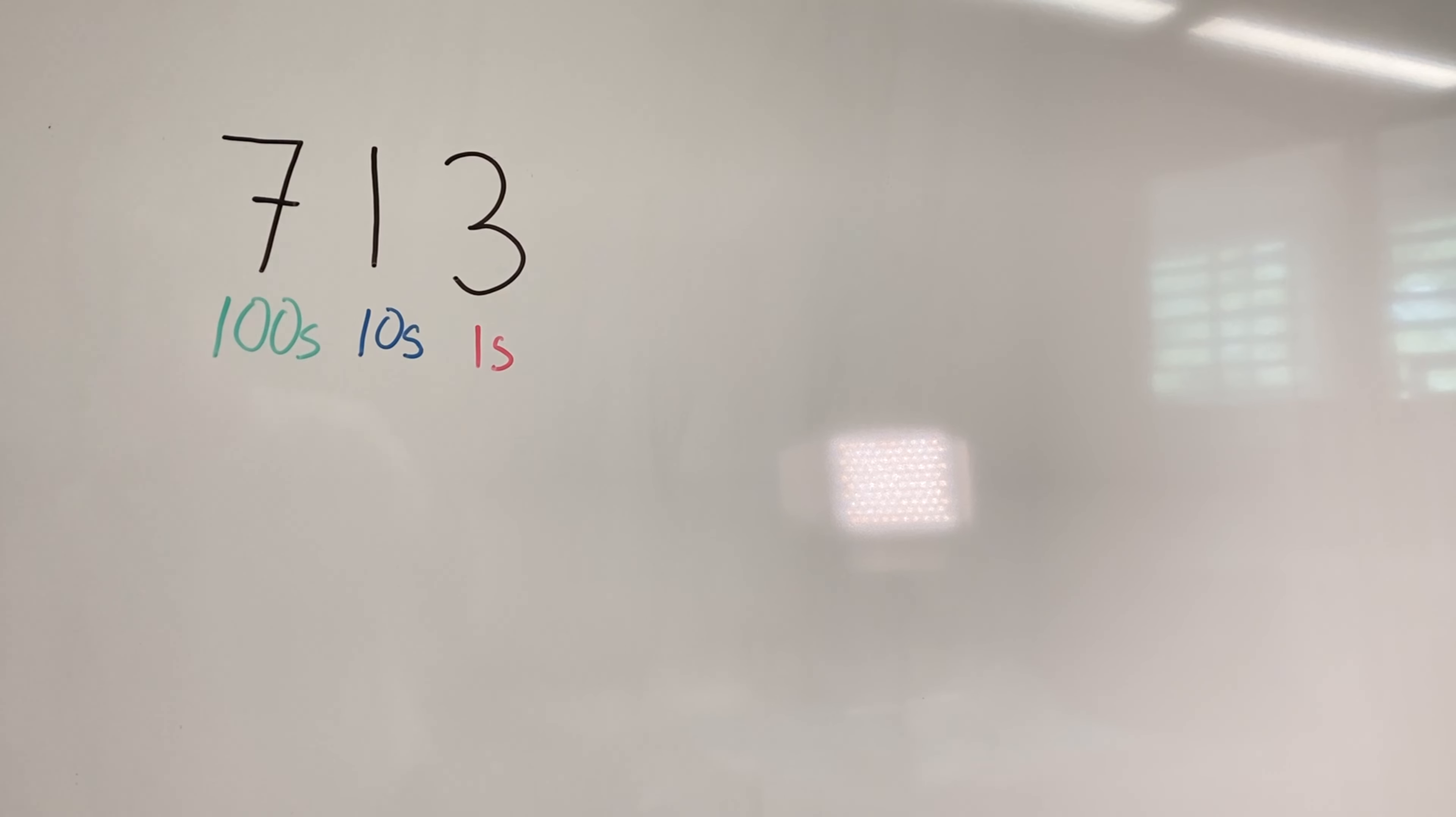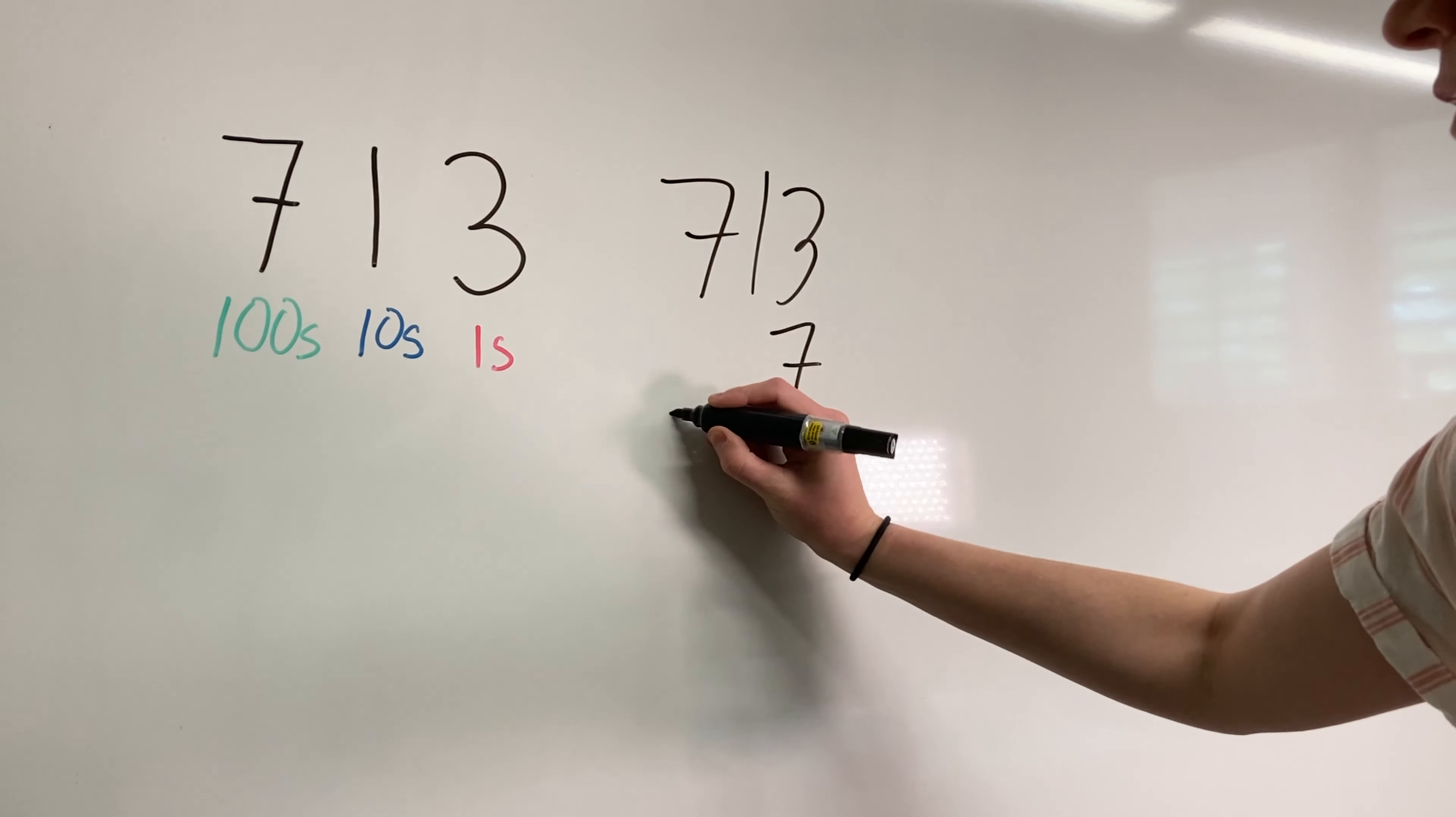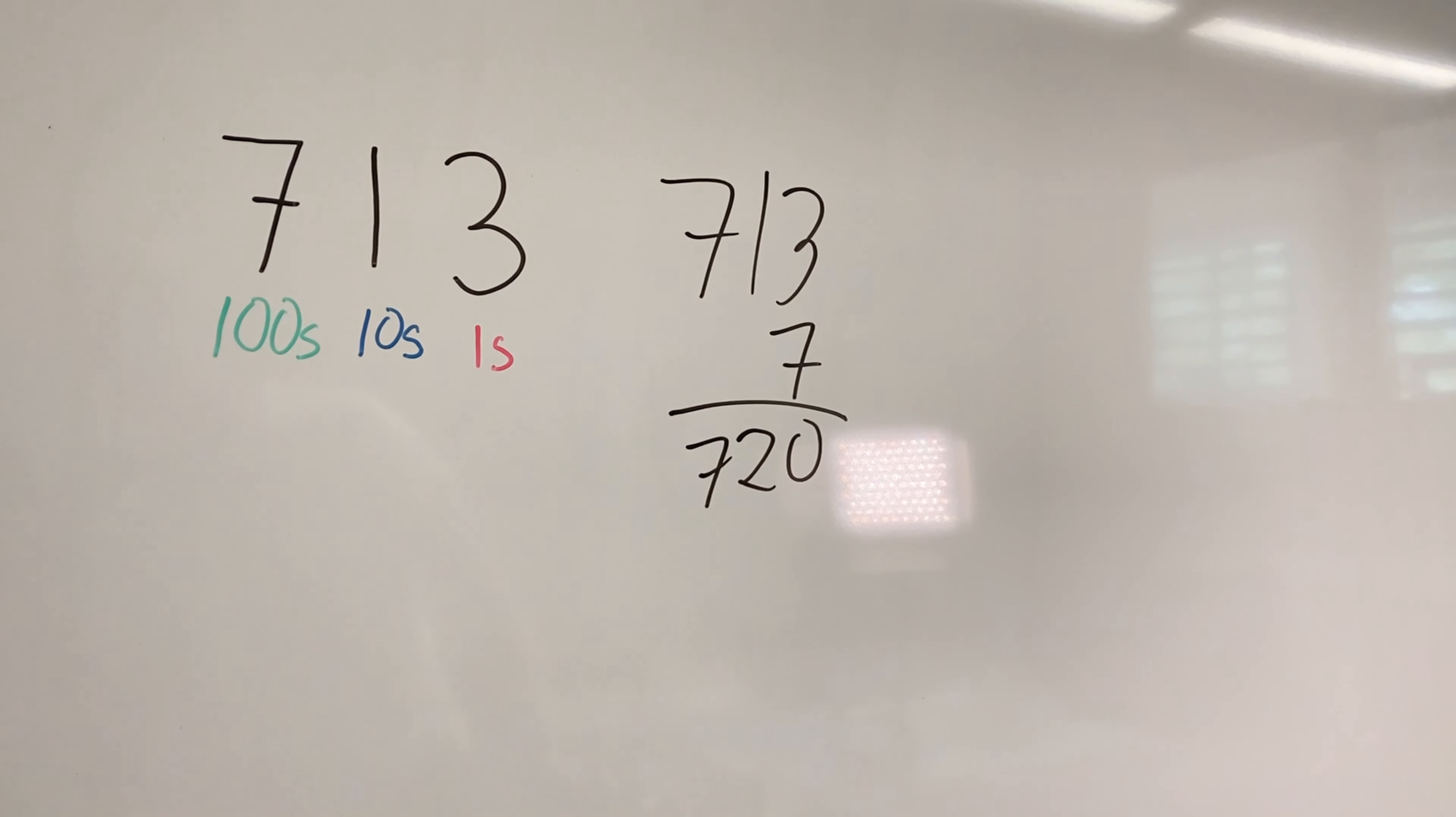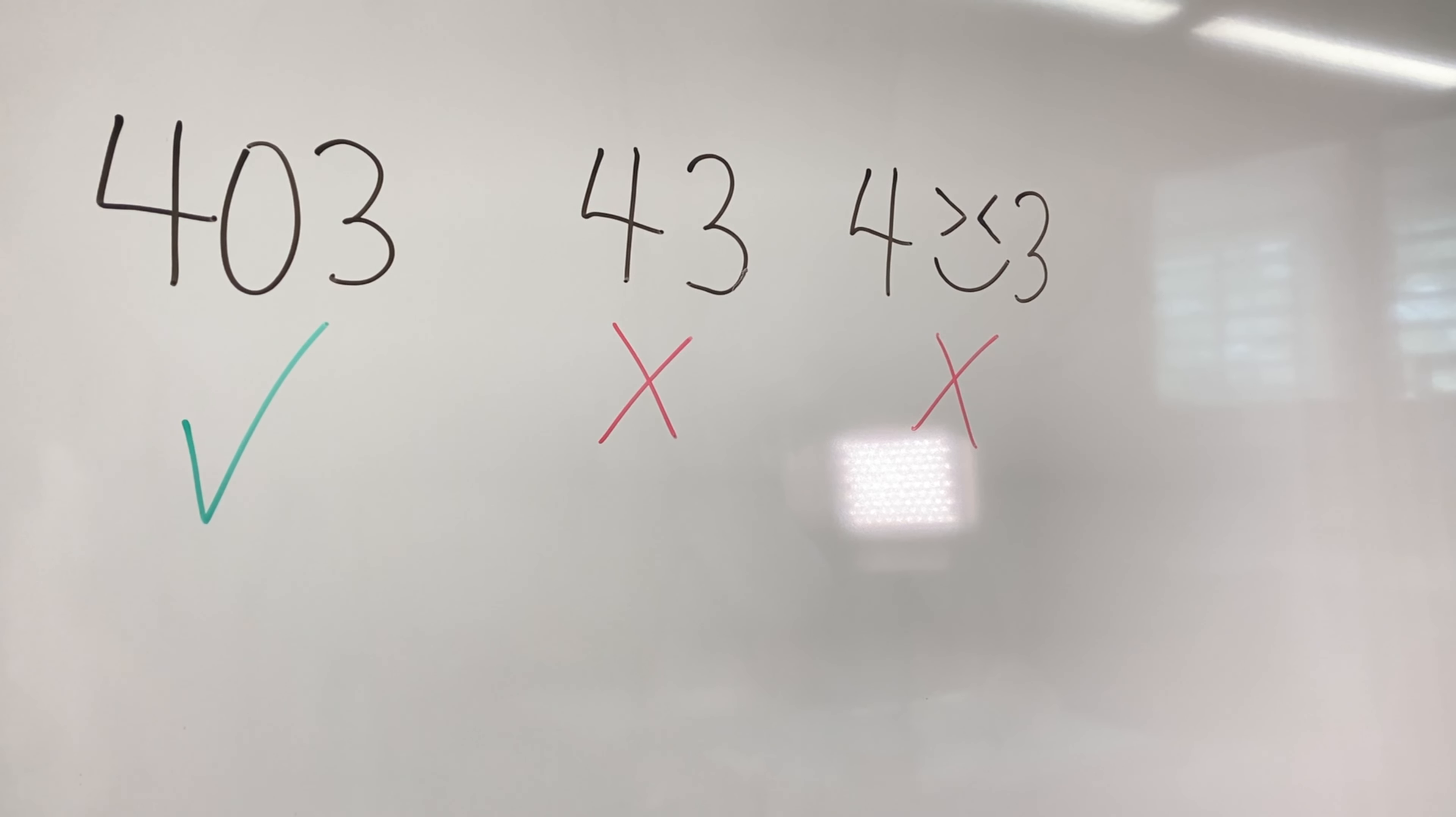When we fill up one of our place value columns, we don't just keep going in that column. We transfer it over to the next column. So let's say we want to take 713 and add seven to it. We're going to fill up our ones column, so we're just going to move it over and say we have 720. If you had 19 kangaroos and then you added one more kangaroo to it, you wouldn't say you have one tens kangaroo and 10 ones kangaroo. You'd just say you have 20 kangaroos. Lastly, if you don't have any numbers in a column, you just put a zero in its place. If you're saying 403, you keep the zero in the tens place to show that the tens place still exists, but there's just nothing in it right now.